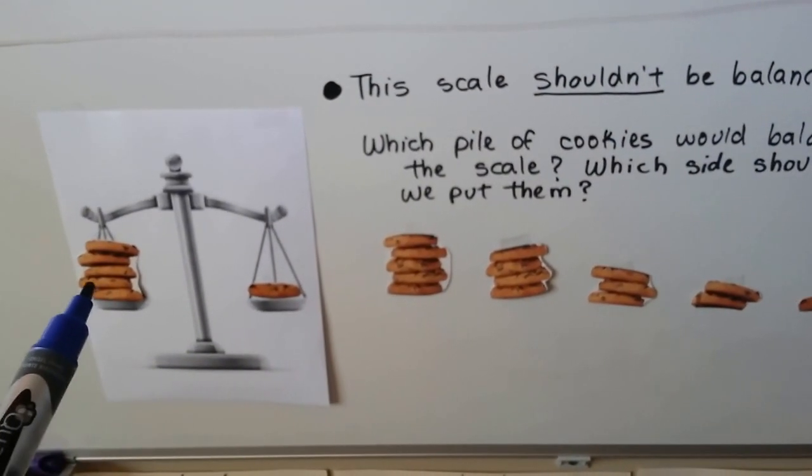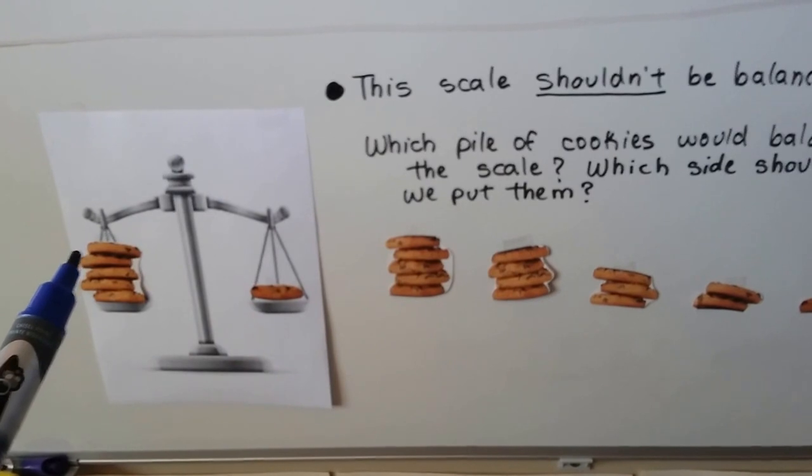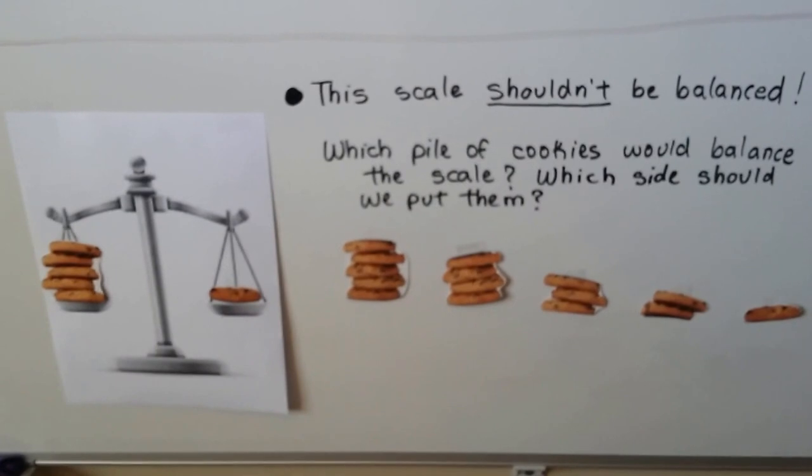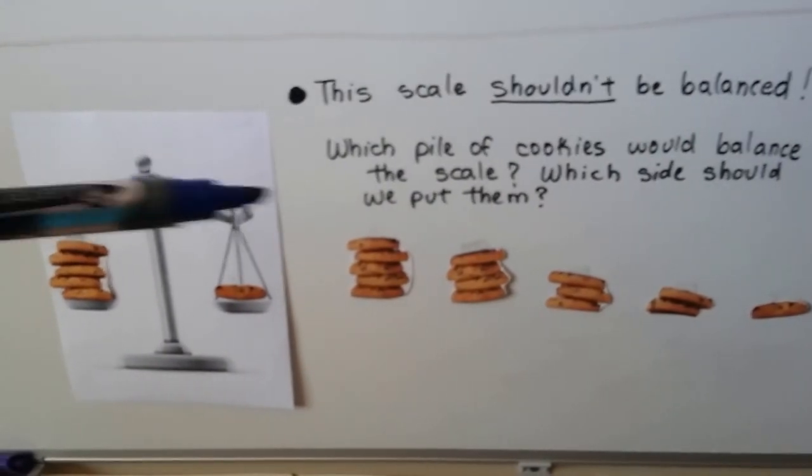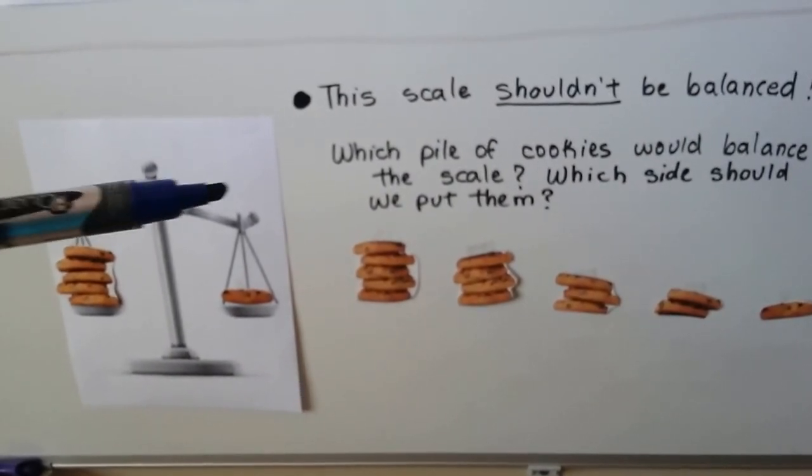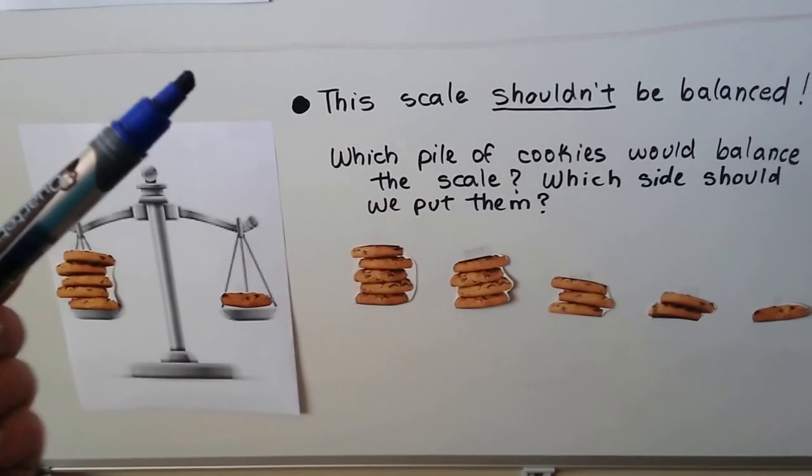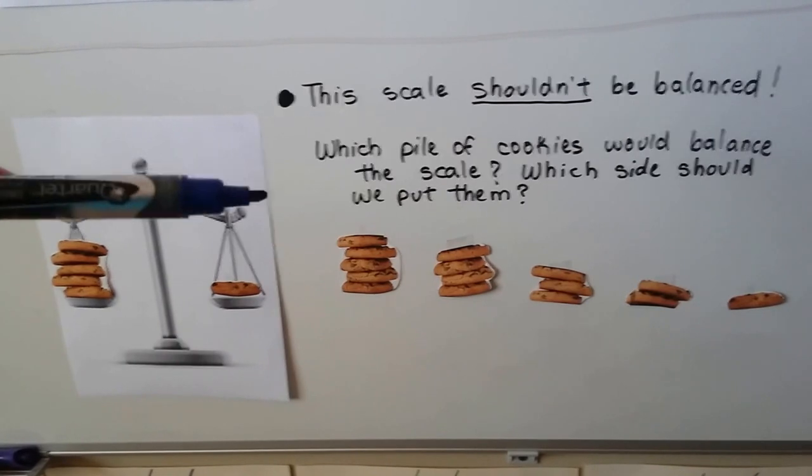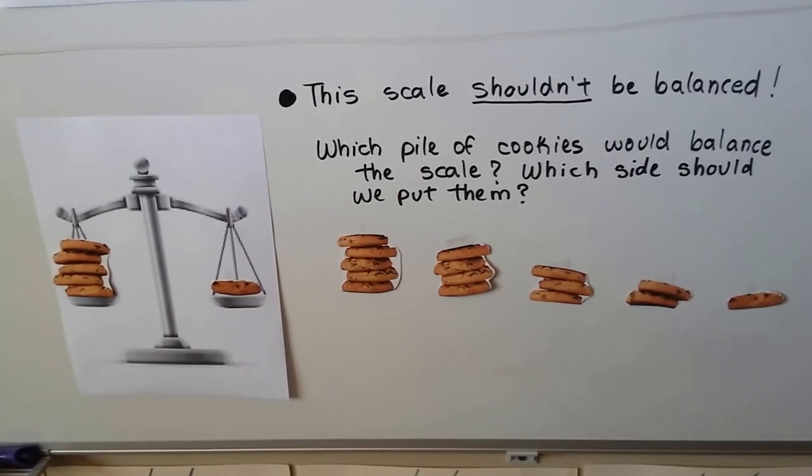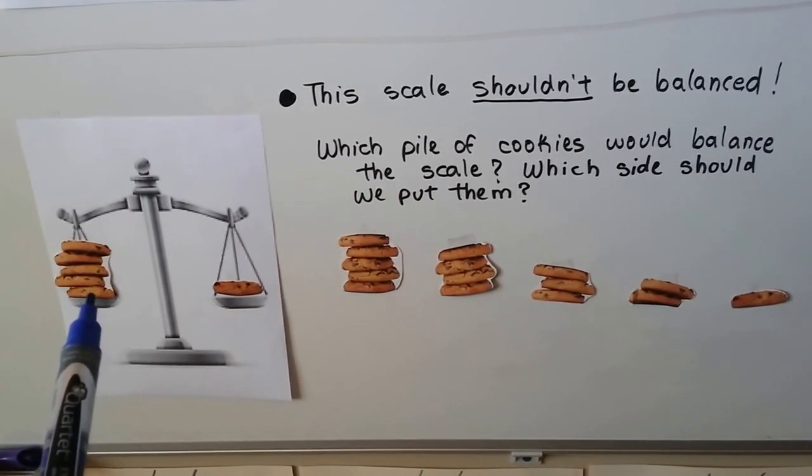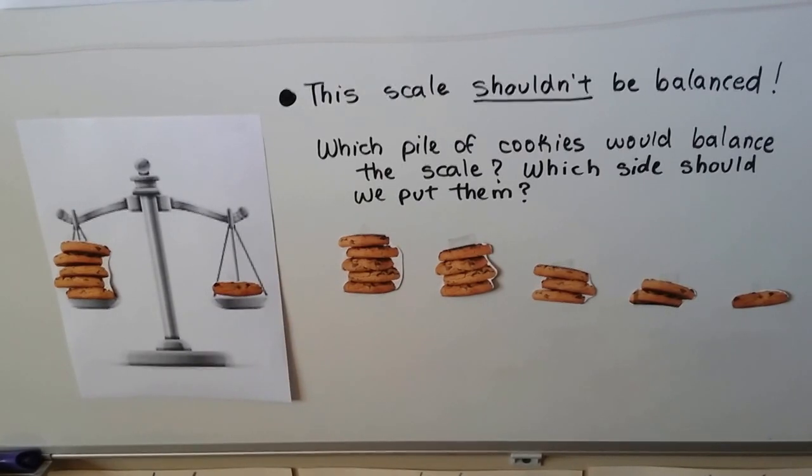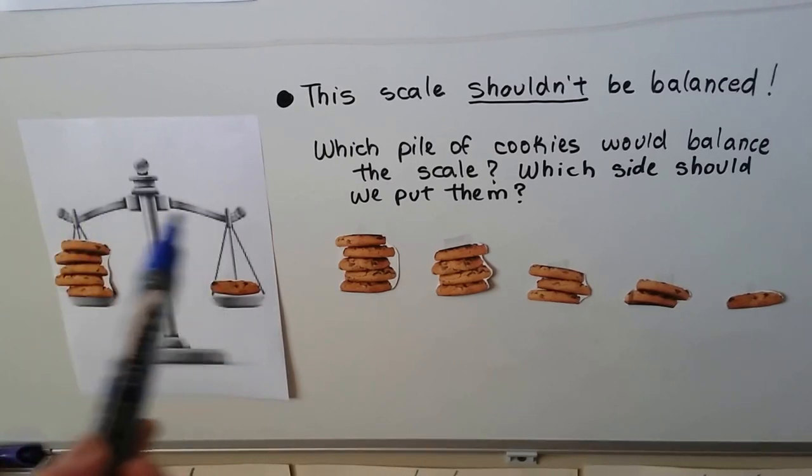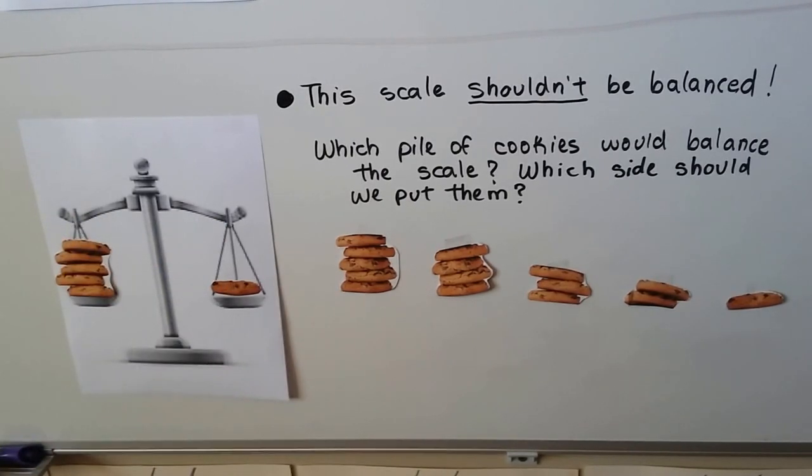Now take a look at this. We've got one, two, three, four, five cookies, and we've only got one cookie on this side. And the scale shouldn't be balanced, should it? Five cookies would make it tip like this. So which pile of cookies would balance the scale and make it so that they were the same weight? We've got five cookies here and one cookie there. How many cookies would we have to add to this side to make this scale even and level so that there's the same weight?